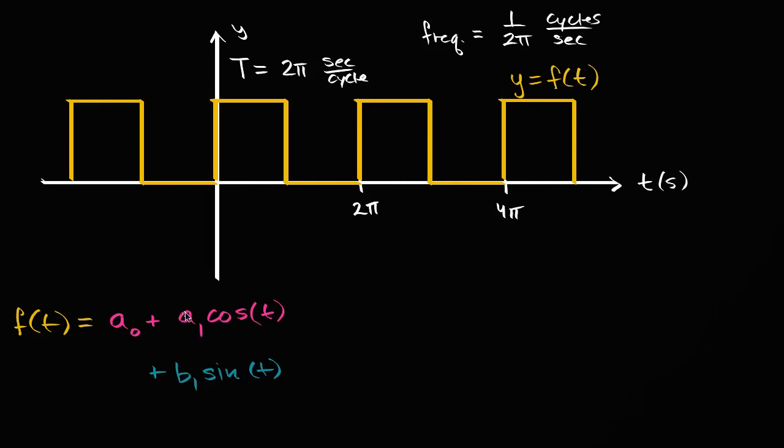If a one is much larger than b one, well it says, okay, this has a lot more of cosine of t in it than it has of sine of t in it. And that by itself isn't going to describe this function, because we know what this would look like. This would look like a very clean sinusoid, not like a square wave.